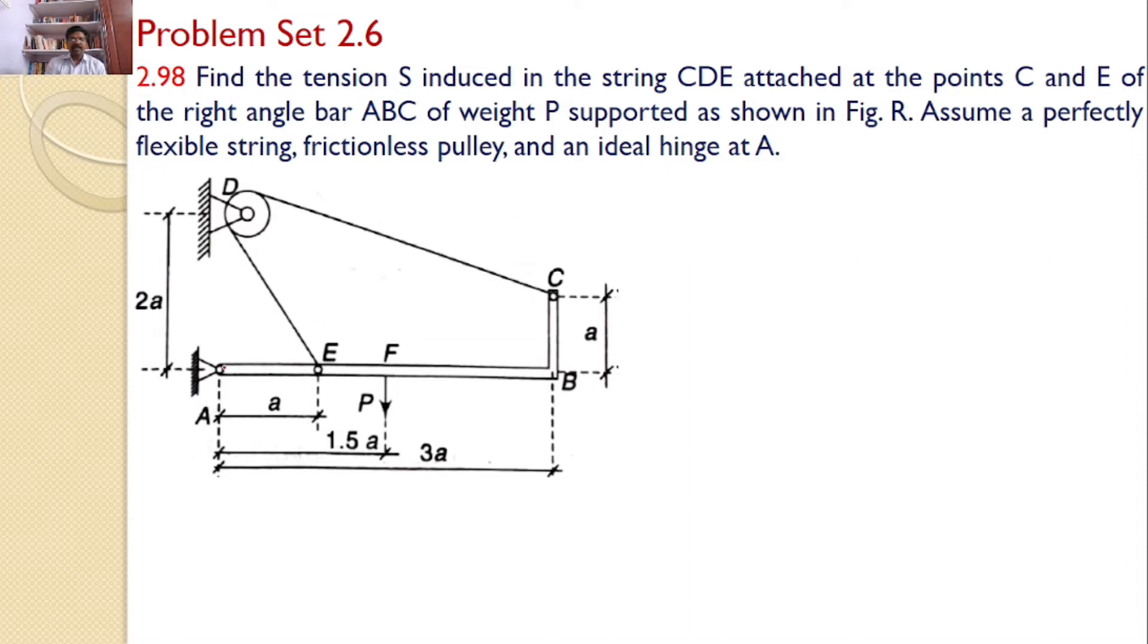That means there is a right angled prismatic bar ABC and a string is attached at C and E which passes over the pulley.